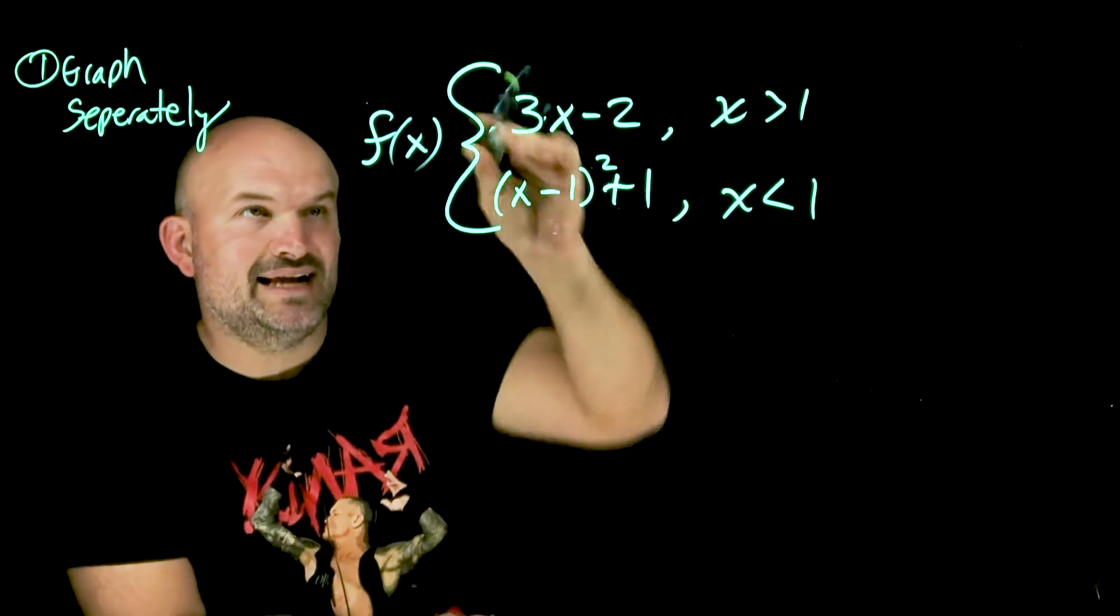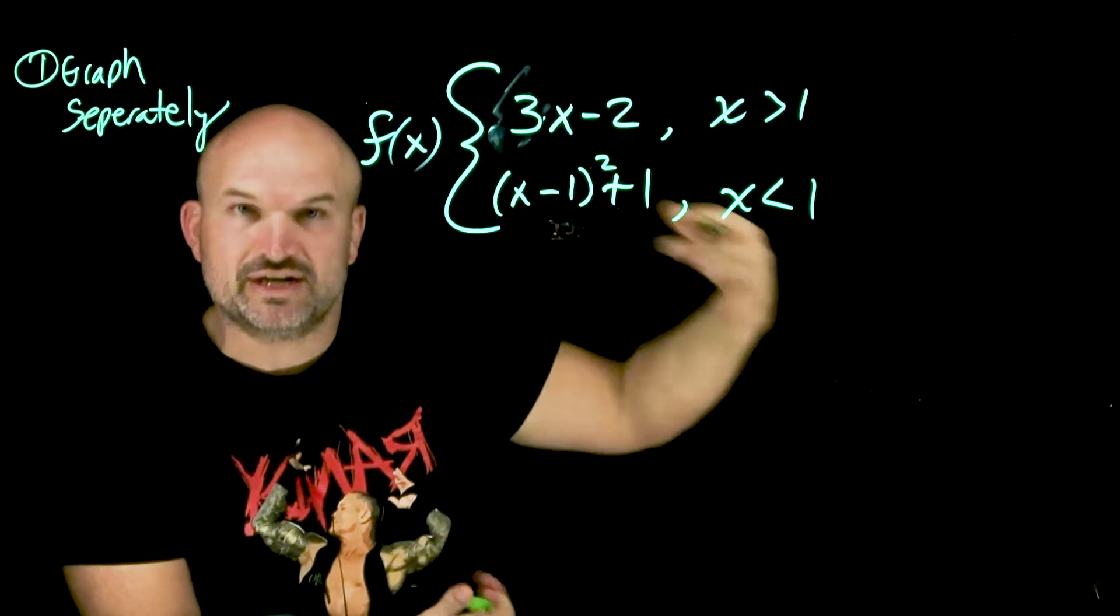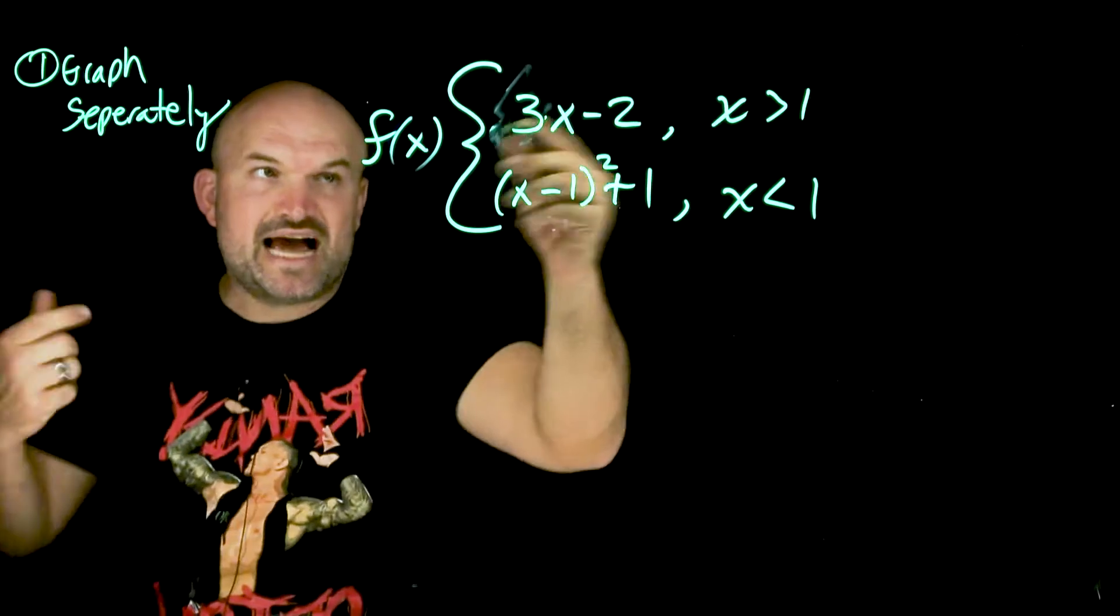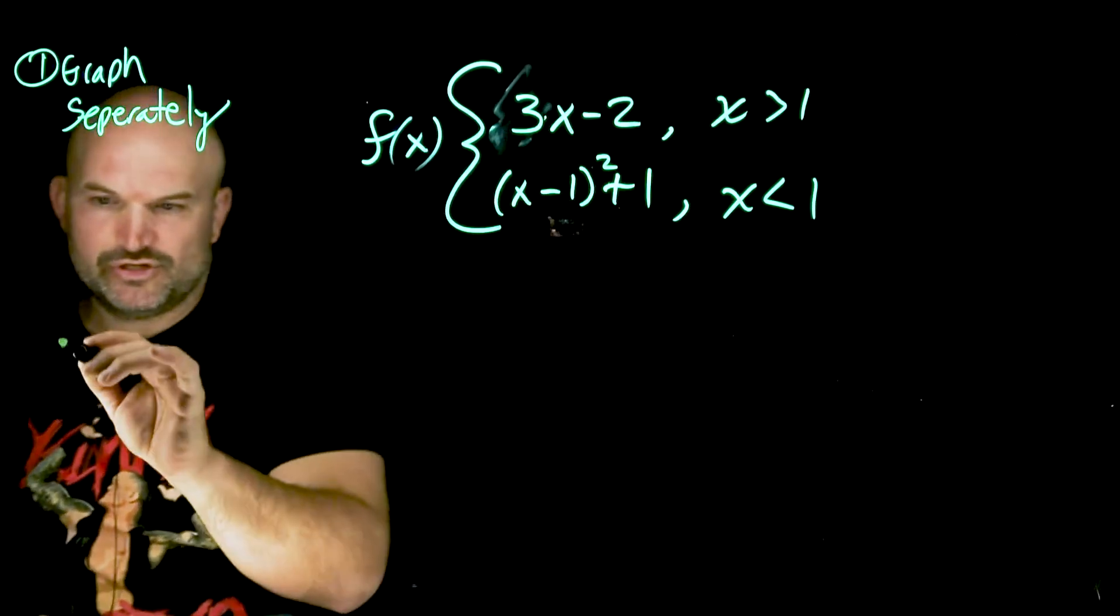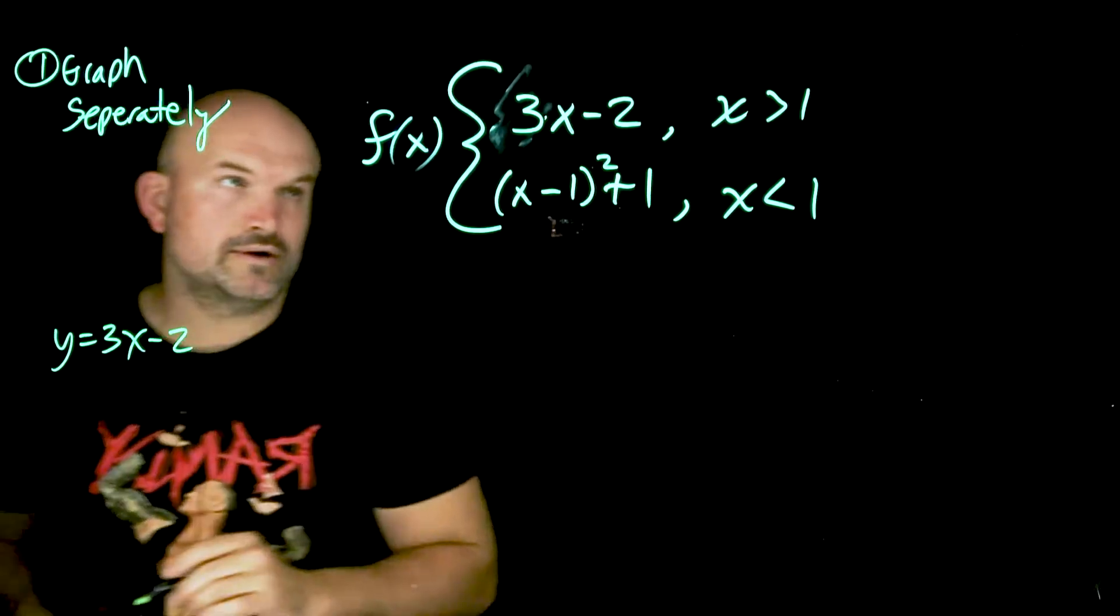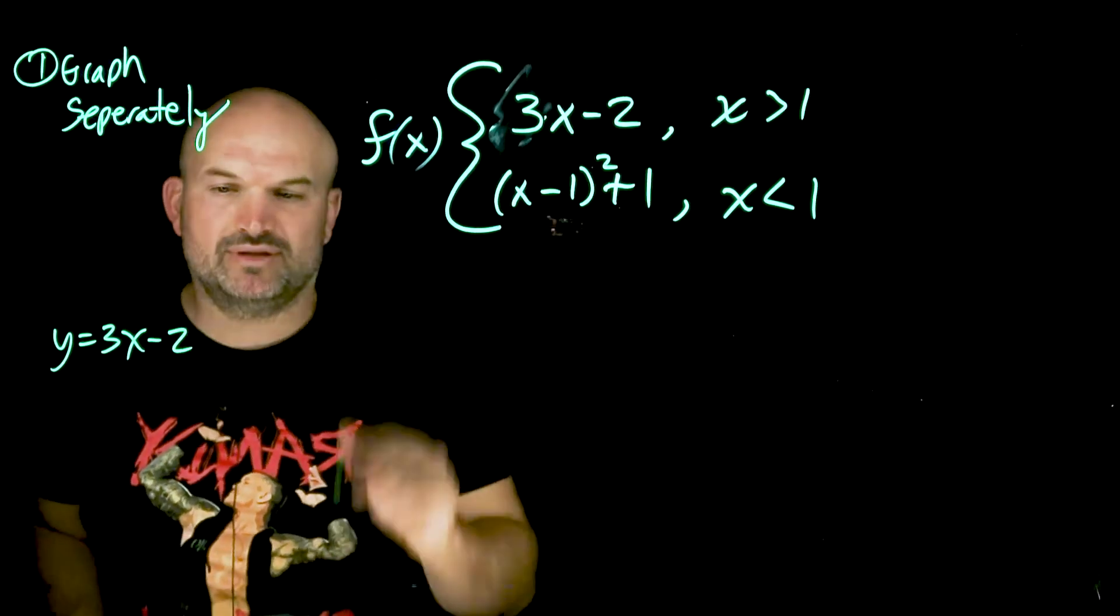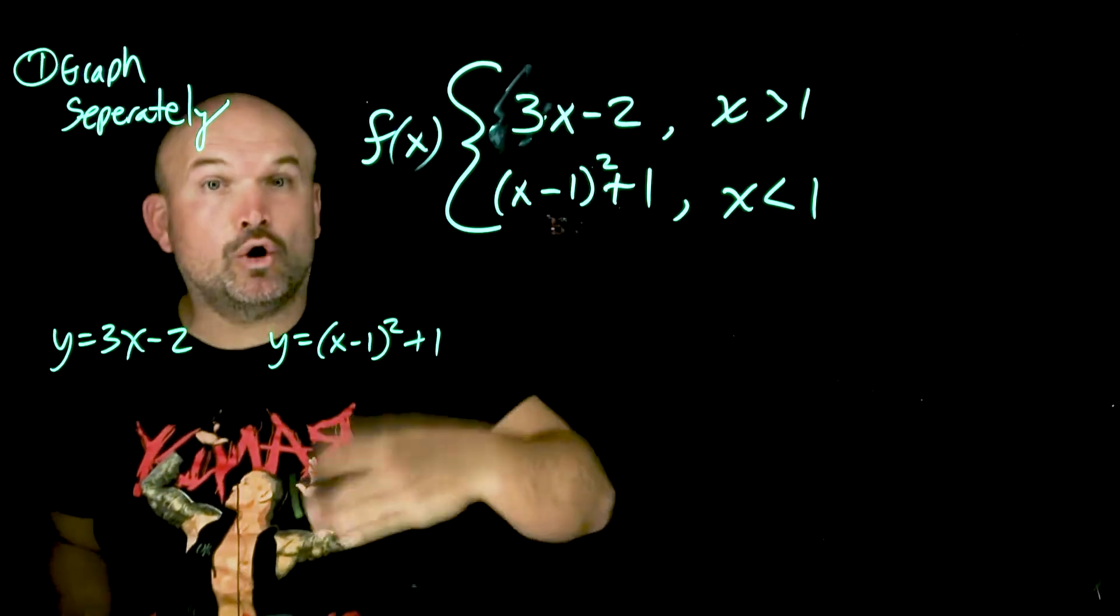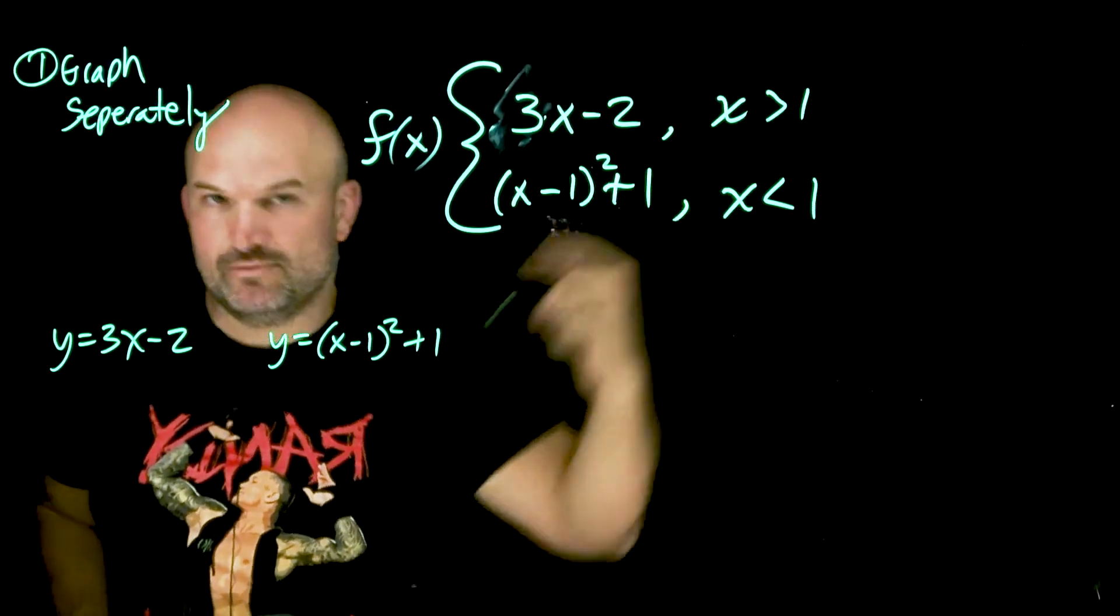So what I mean by that is a piecewise function is just a collection of two or more equations with domain restrictions. So basically, this f of x says 3x minus 2, which is your equation, and y equals x minus 1 squared plus 1.